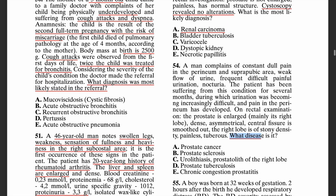The next question asks about the most likely diagnosis. We have a man who complains of constant dull pain in the perineum and suprapubic area, with weak flow of urine, frequent, difficult, and painful urination, and nocturia. The patient has been suffering from this condition for several months — it is chronic and becoming increasingly difficult — and then pain in the perineum developed. On rectal examination, the prostate is enlarged, dense, asymmetrical, with the central fissure smoothed out, and the right lobe is of stony, painless, tuberous density.